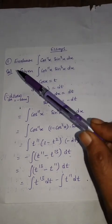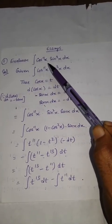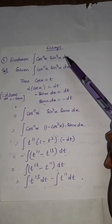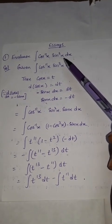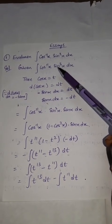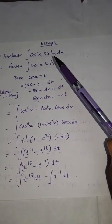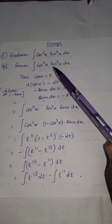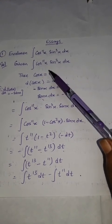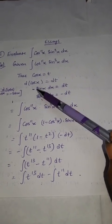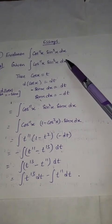Next question: evaluate the integral of cos power 11x multiplied by sin cubed x dx. This problem is important and straightforward. The problem is integral of cos¹¹x · sin³x dx.